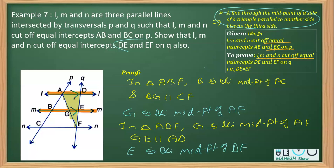So this is what we have to prove: E is the midpoint of DF, or we can further add that DE is equal to EF. So this much we have to write in the proof part. And that's what we proved.